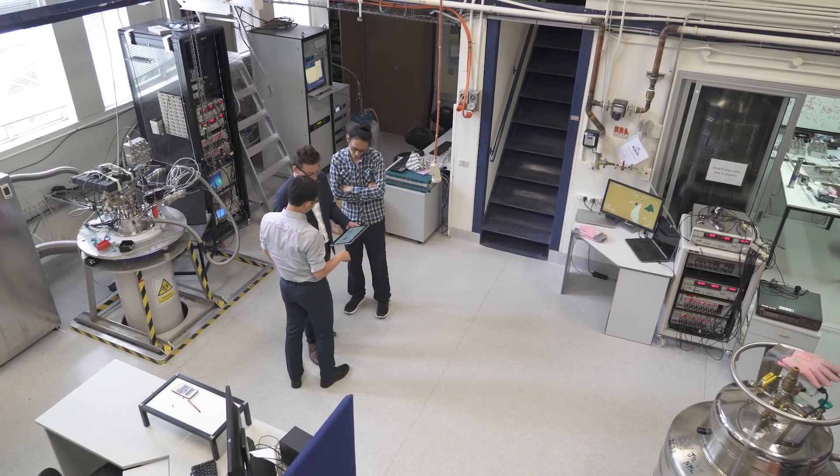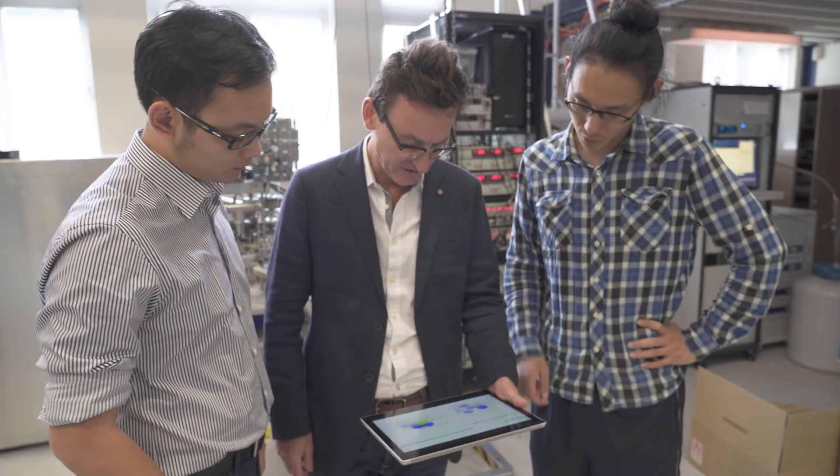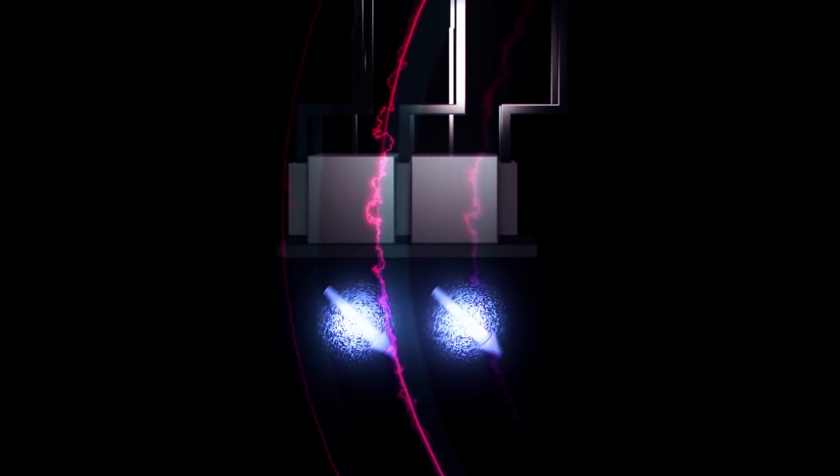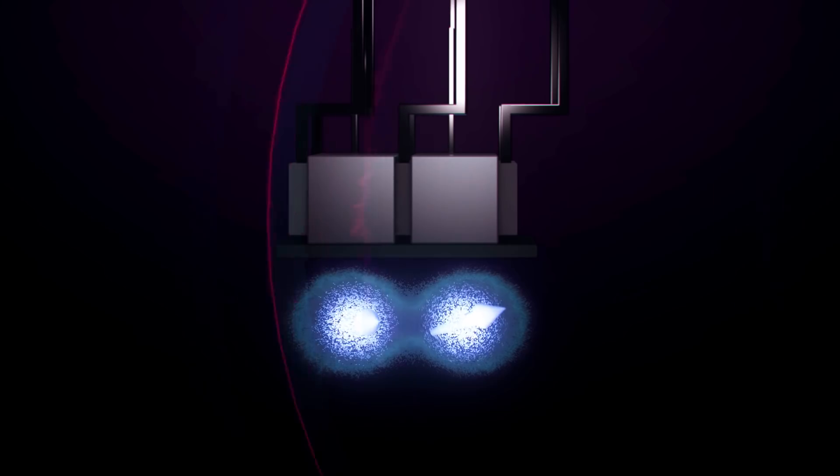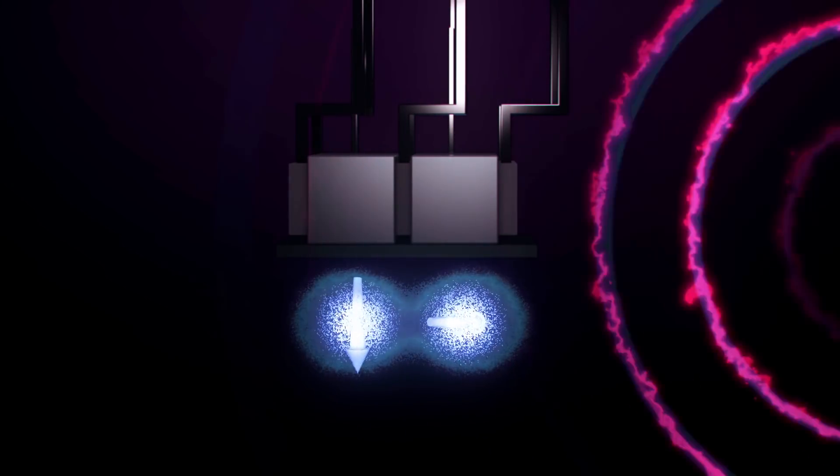So to assess the fidelity of a two-qubit operation, you have to try out random sequences of these Clifford Gates in a process that's called randomized benchmarking. To do this, we apply a random set of Clifford Gates to the two spins, and at the end, see how close our two-qubit state is to what we intended.